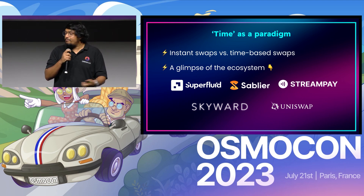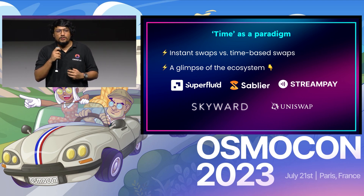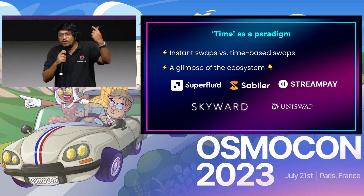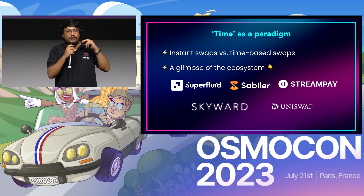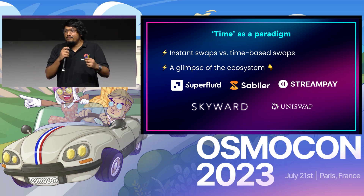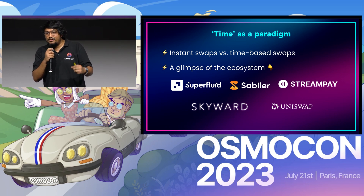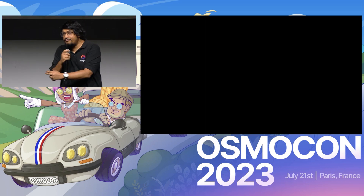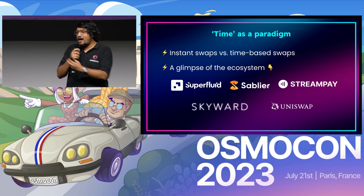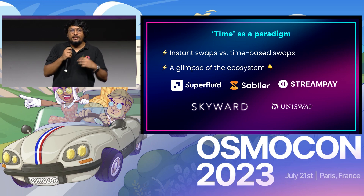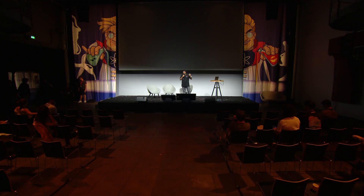There are multiple protocols working on time-based models. You have projects like Superfluid and StreamPay on Omniflix — these are time-based token transfers. If you want to pay someone or transfer tokens, you can send them tokens block by block, second by second, day by day, over a period of time. You also have Skyward on Near, which inspired StreamSwap, where auctions are run over a period of time — hour-by-hour auctions for a token launch where price gets discovered that way.